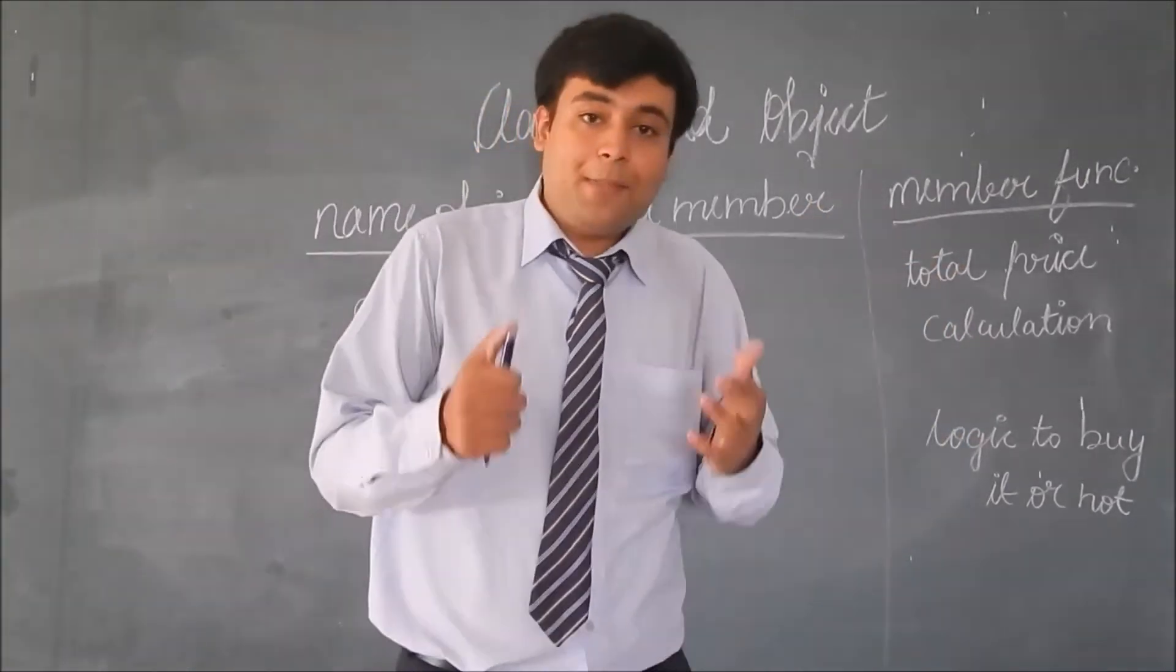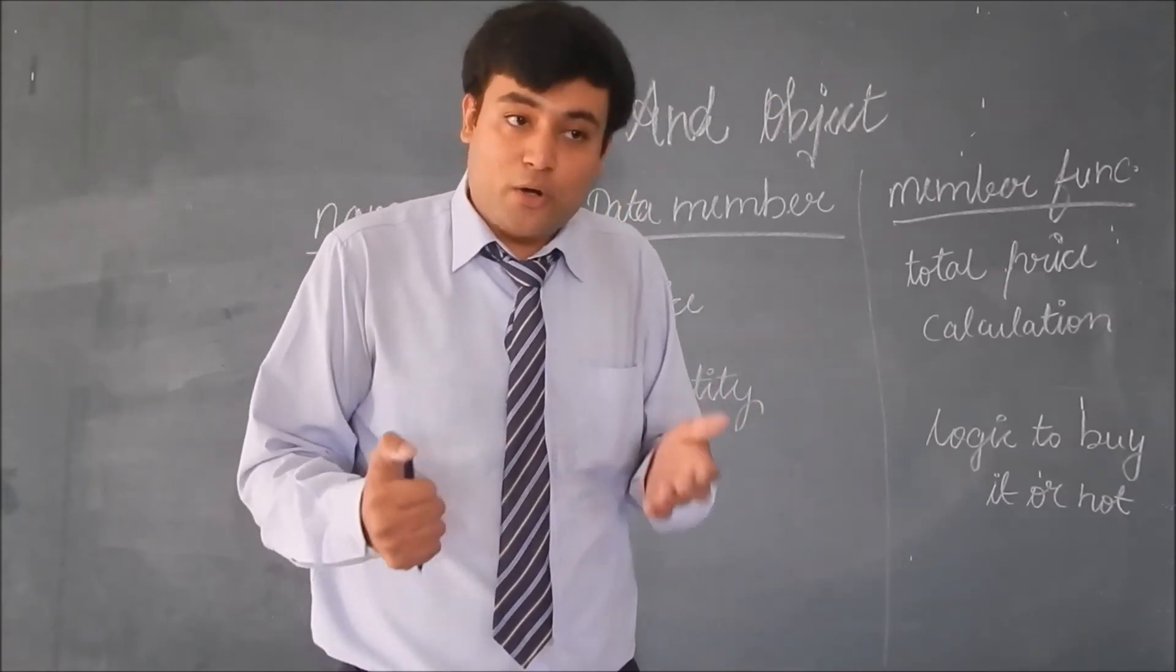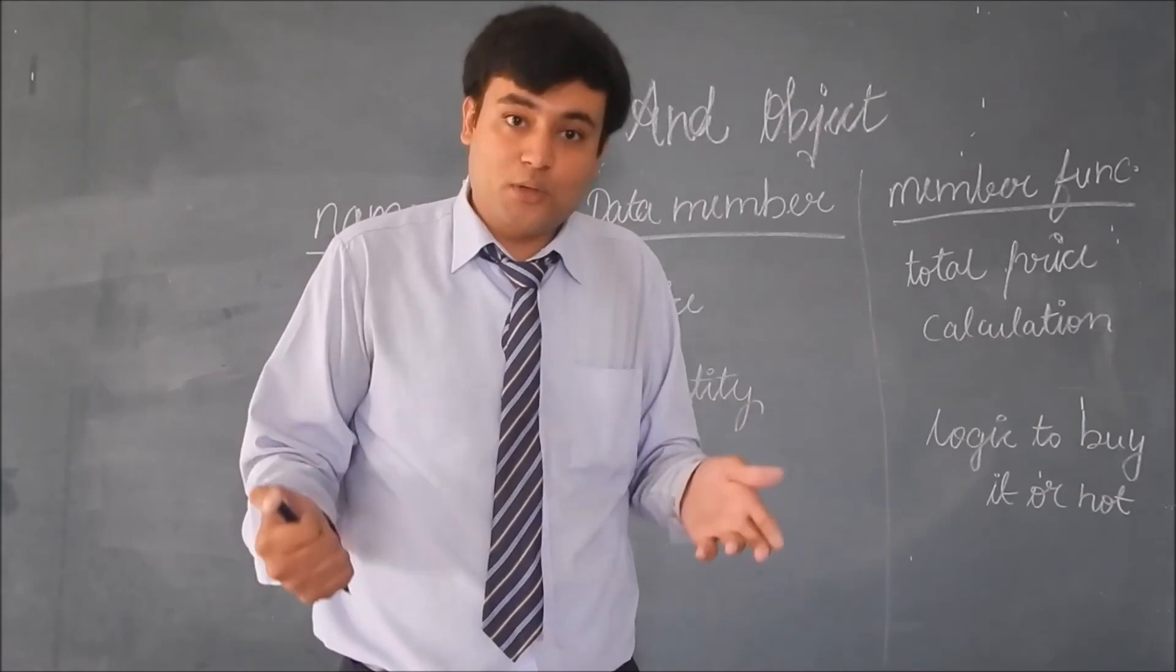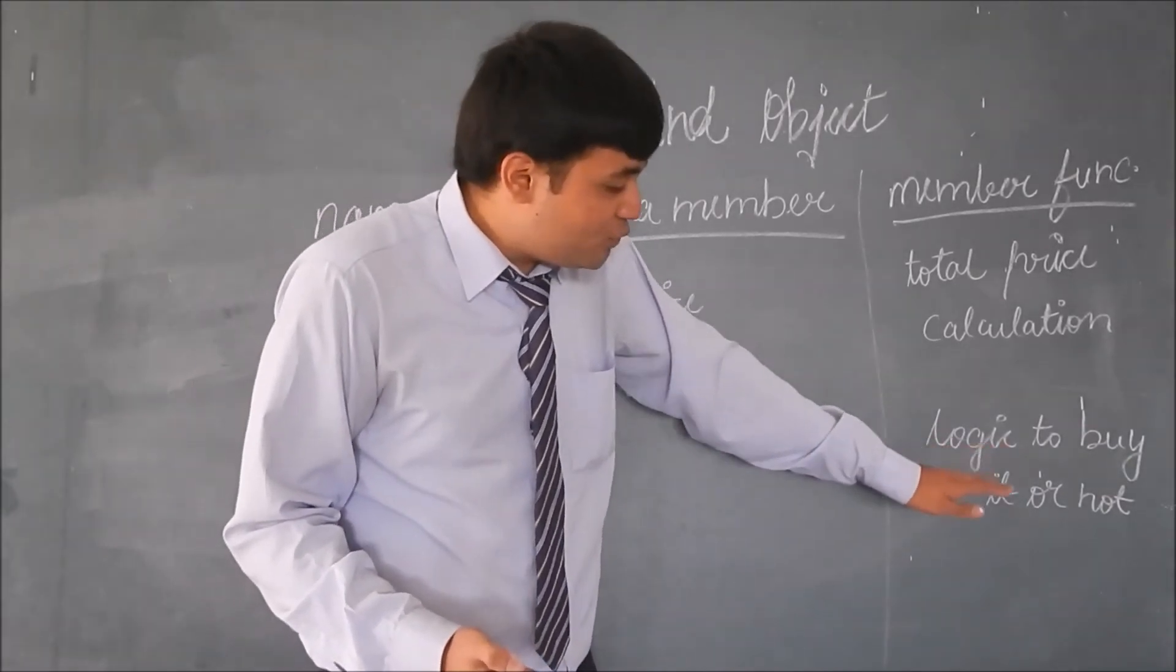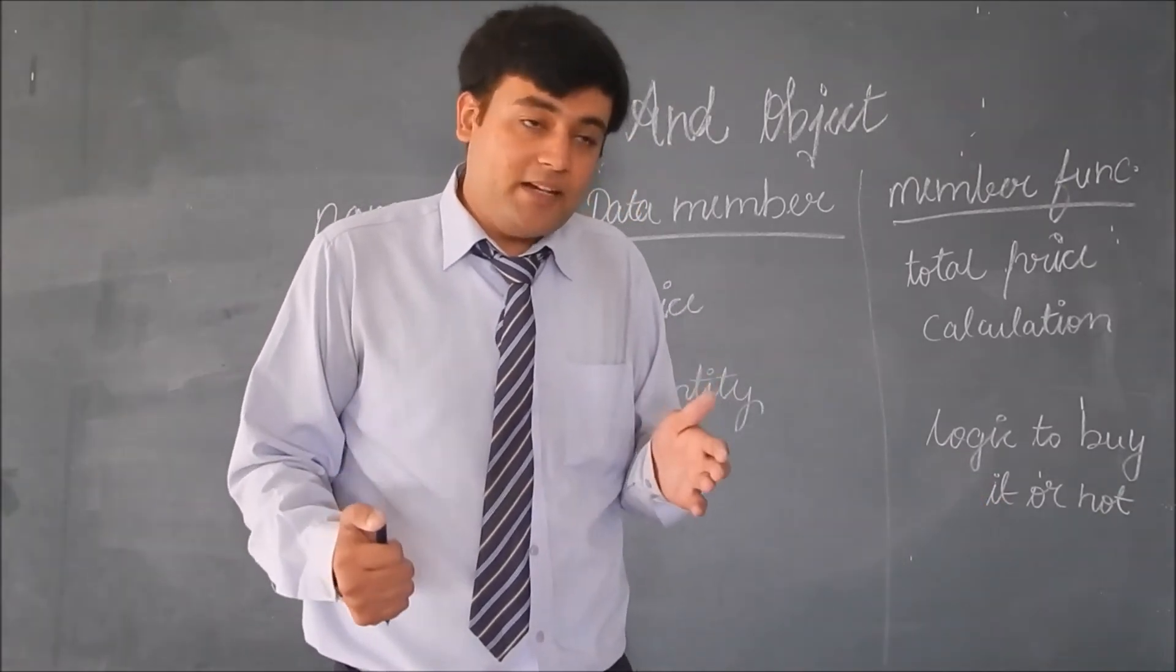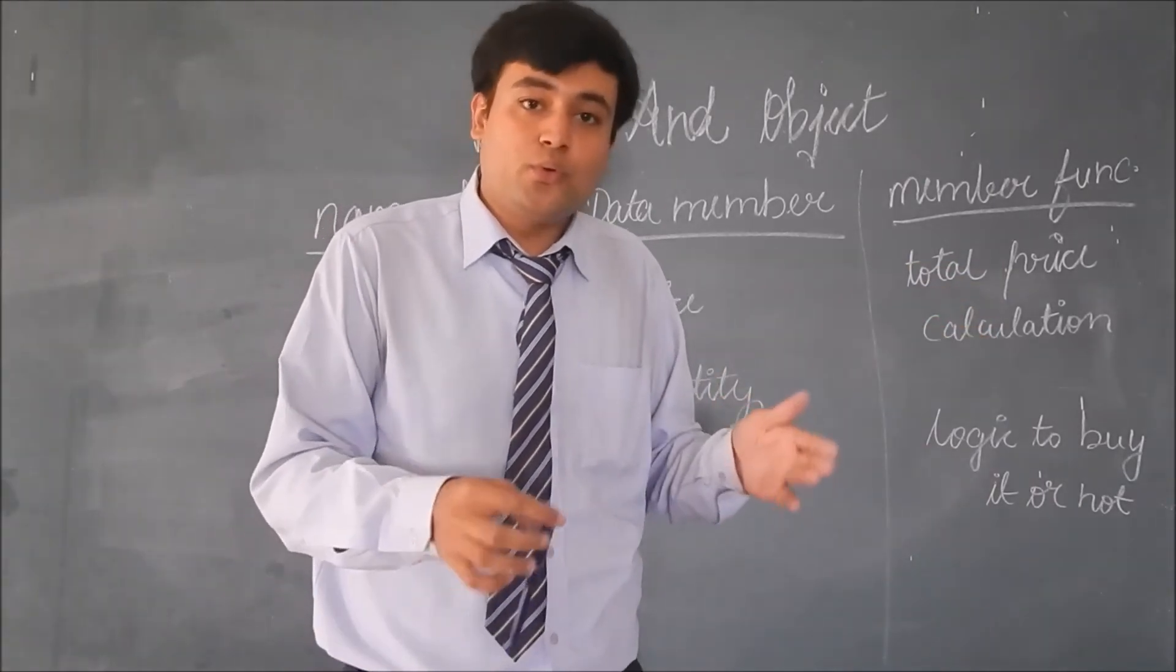Then, you will apply the logic: how to bargain, buy it or not, qualitative analysis, are the fruits in good shape or of bad quality. That will come in the logic to buy it or not. In the end, the logic that would be applied is total price calculation, the payment that you will do to the shopkeeper.